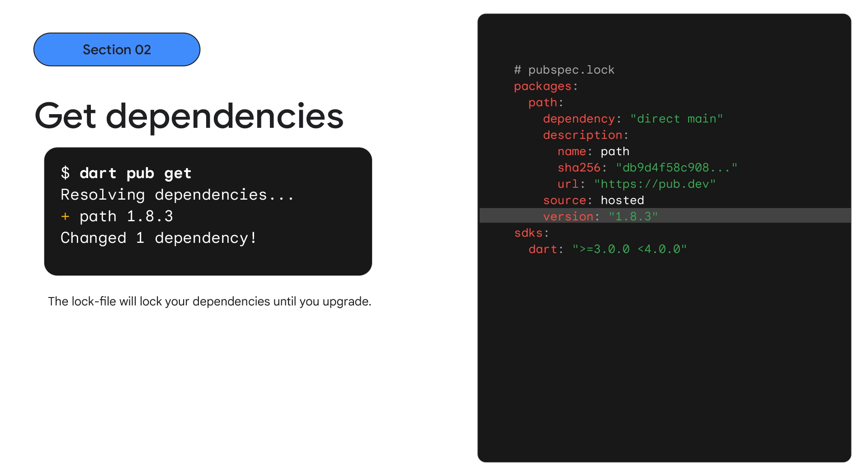When we fetch dependencies, we'll have a pubspec.lock file, which locks dependencies to a specific version. If you're writing an application, it's important to check the lock file into source control, because it ensures that the version of your dependency you're using in testing is also the version used in production. However, if you're creating a package to be published on pub.dev, it's often best to not check in the lock file, because you will want to be testing with the latest version of your dependencies, as this is probably what most of your users are going to get.